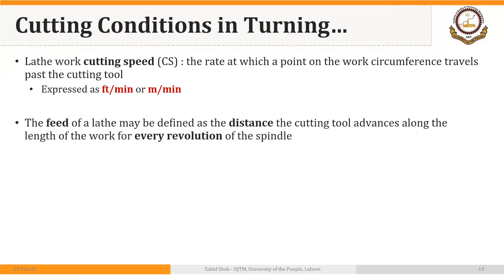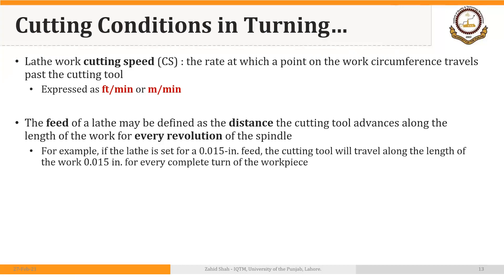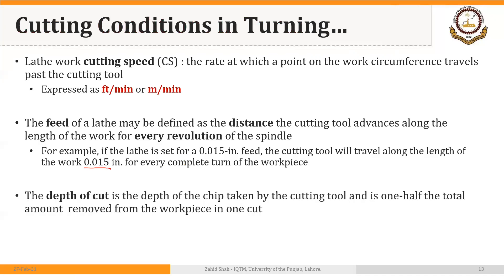The feed of a lathe may be defined as the distance the cutting tool travels along the length of the work for every revolution of the spindle. For example, if the lathe is set for a 0.015-inch feed, the cutting tool will travel 0.015 inch along the length of the work for every complete turn of the workpiece. Depth of cut is the depth of the chip taken by the cutting tool and is one half of the total amount removed from the workpiece in one cut.